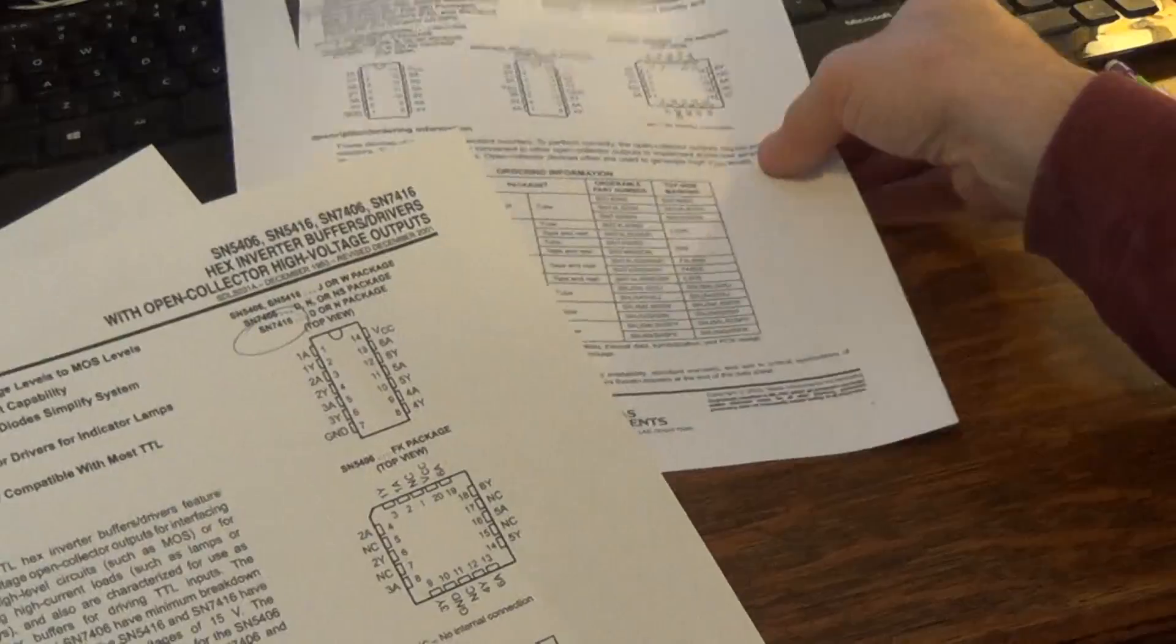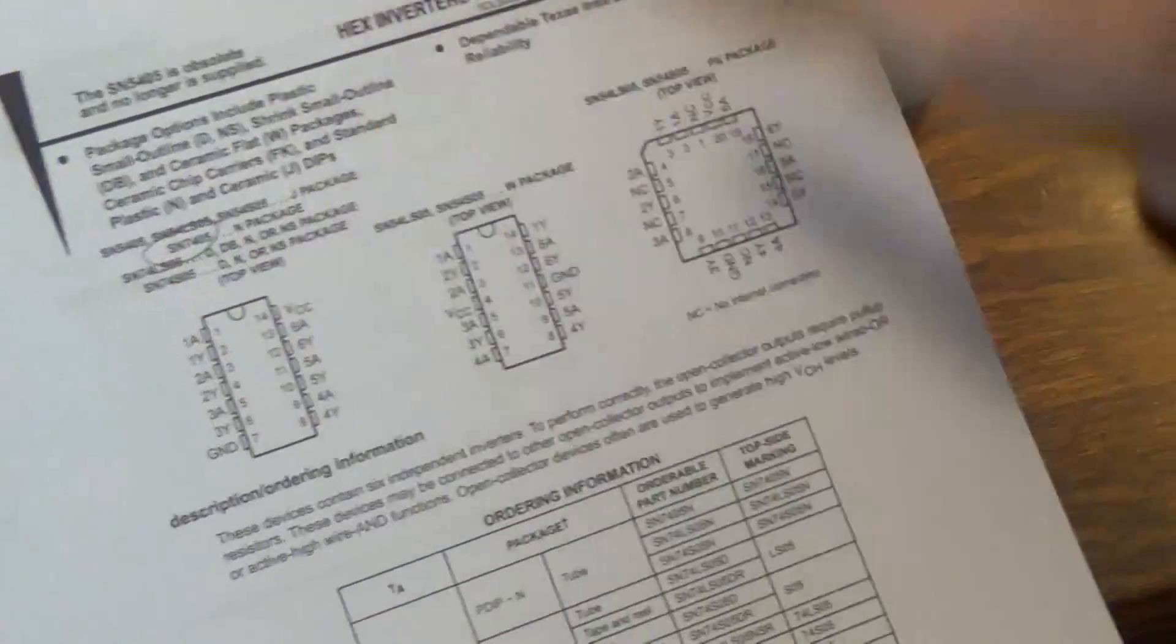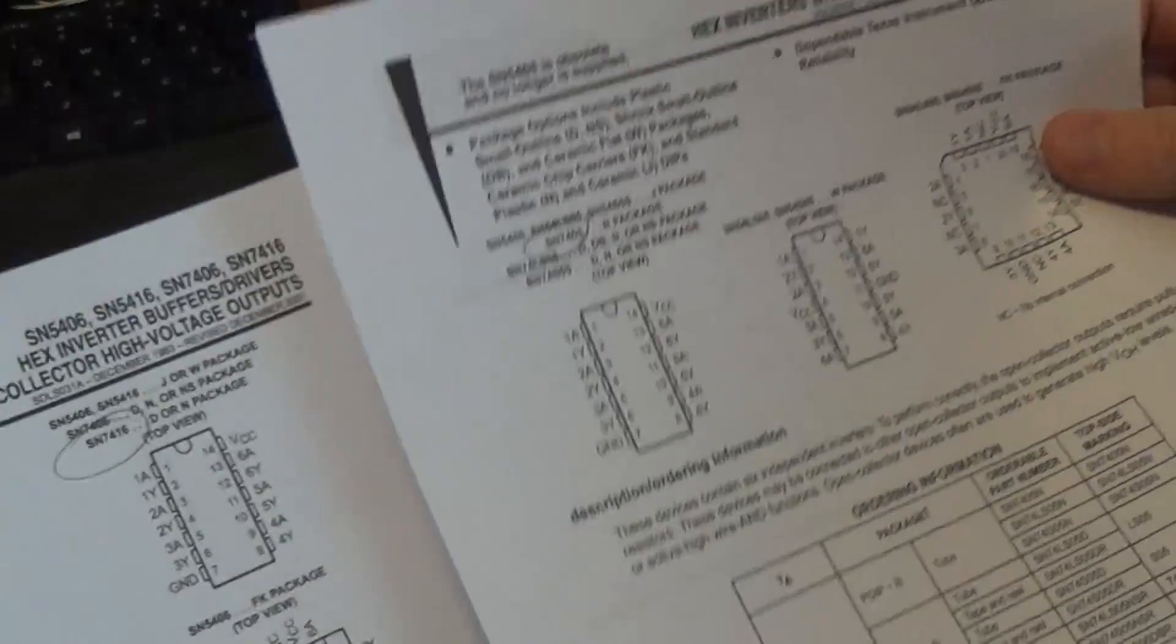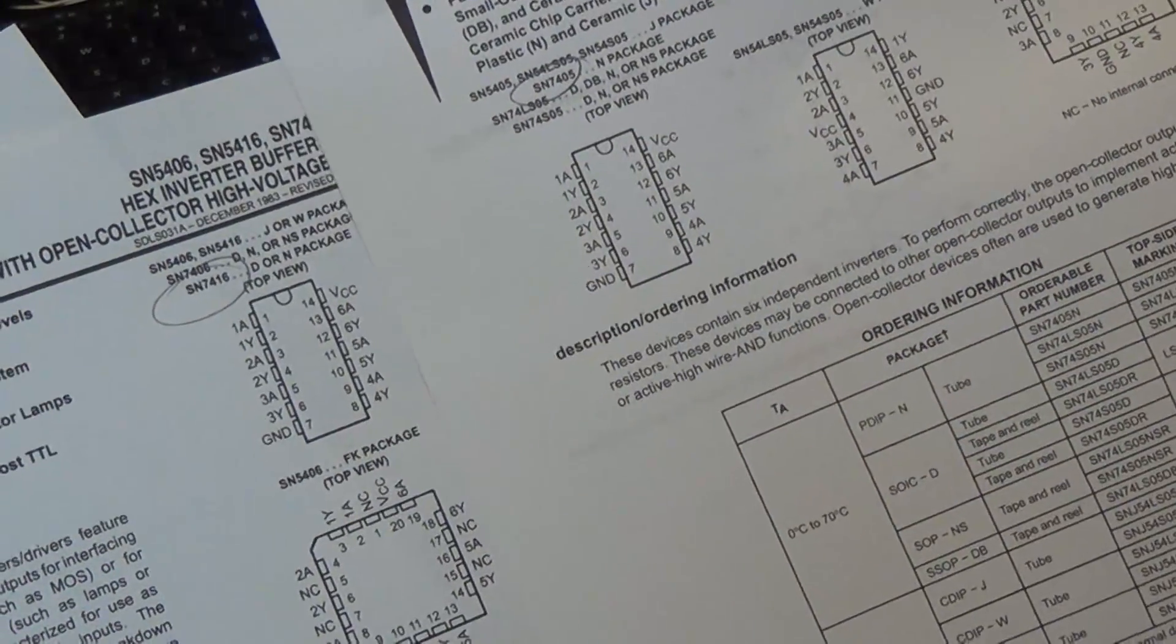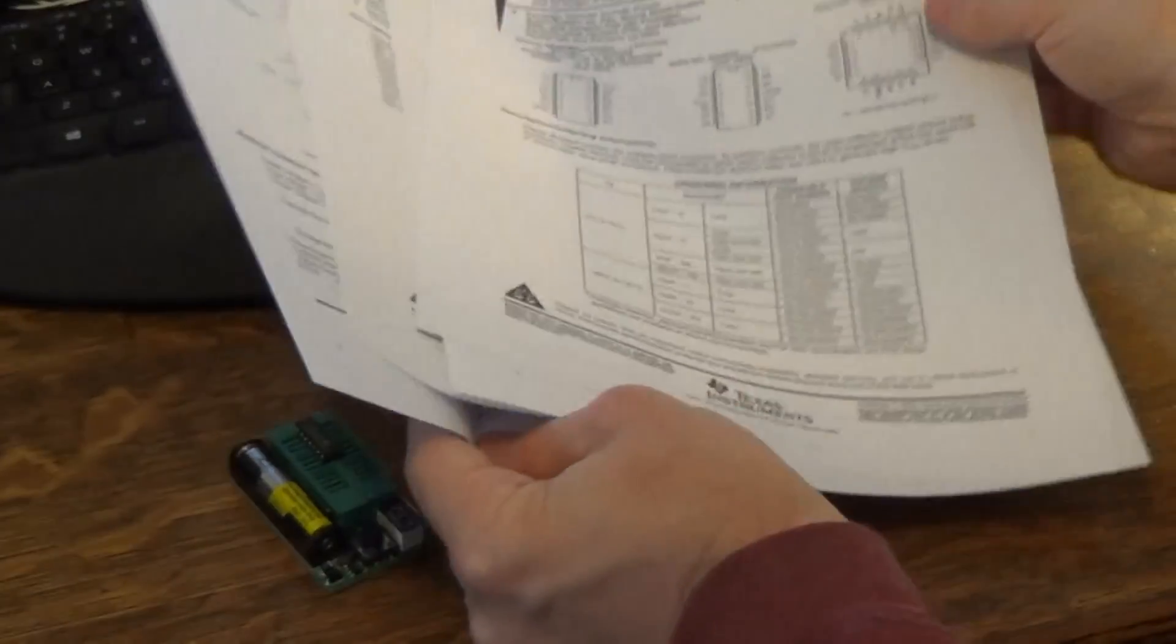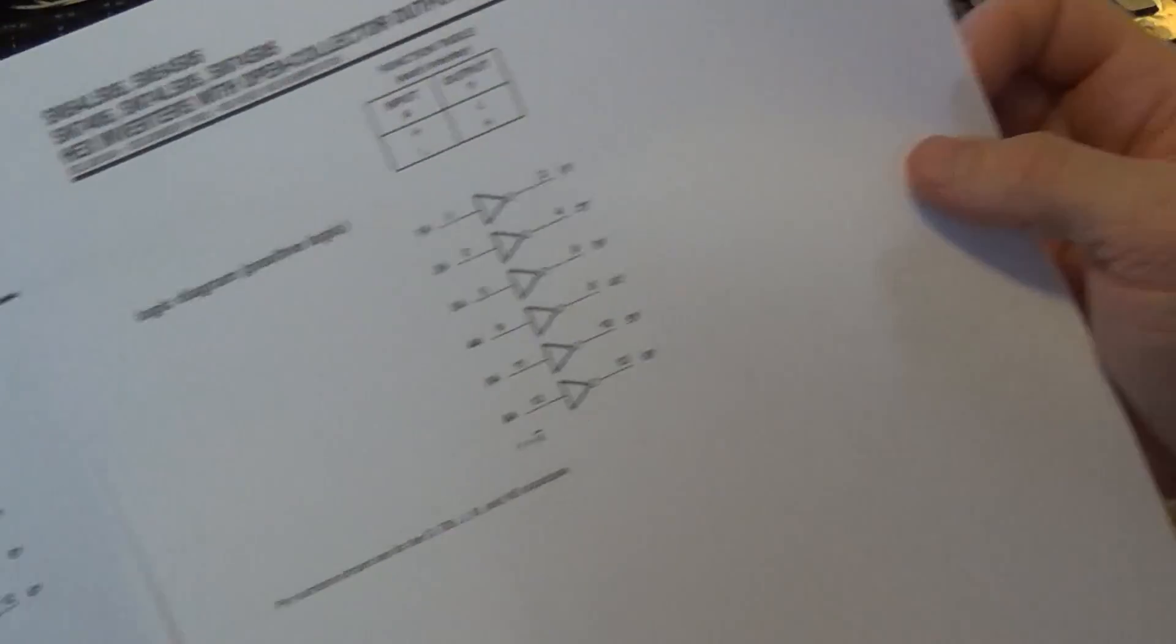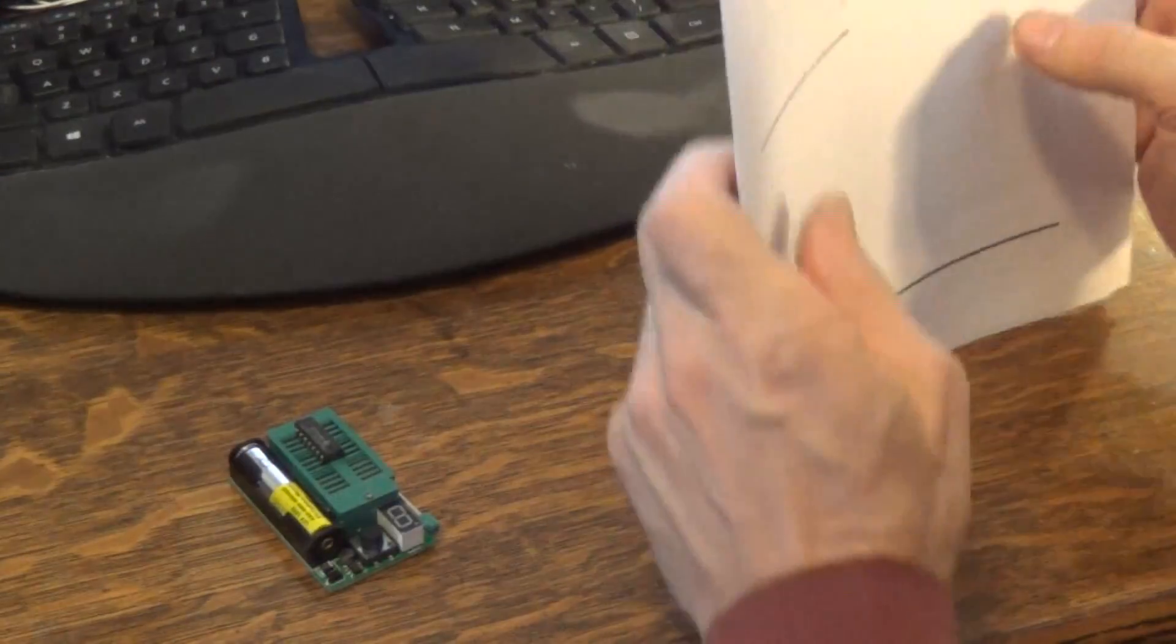And then I look at 7405, which is this one. And hopefully you can see them both, they're basically identical side by side. And then you look at the logic and it actually matches perfectly. So it makes sense that it's actually identifying this as 7405.